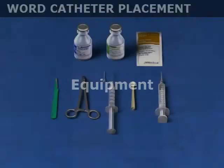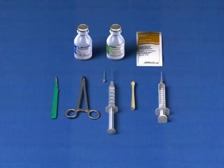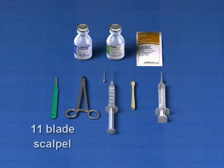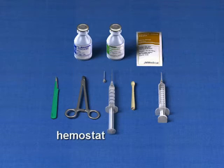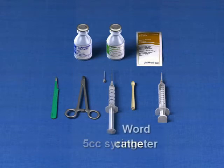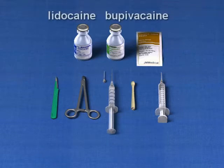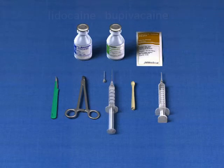The equipment required for word catheter placement includes an 11-blade scalpel, a hemostat, 5 cc's of sterile water, and a word catheter, along with 10 cc's of lidocaine and bupivacaine local anesthetic in a one-to-one mixture.